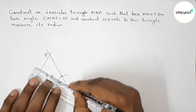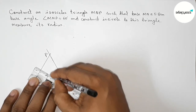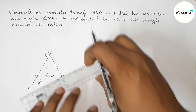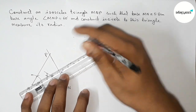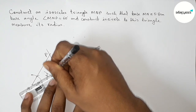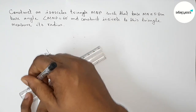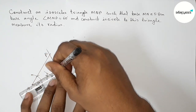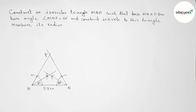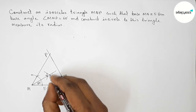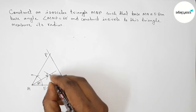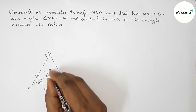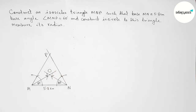Bisecting the two base angles of 60 degrees first, then joining all the angle bisectors. Both bisectors meet here at a point — we take this as point O, the incenter of the triangle.